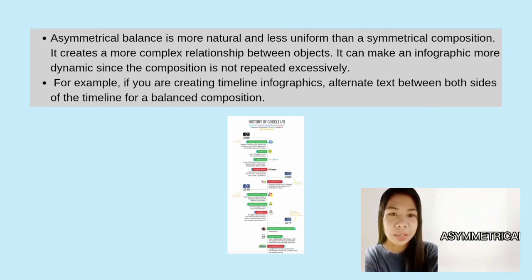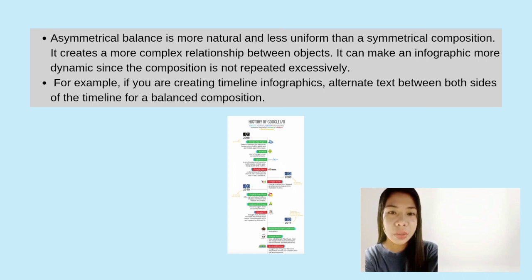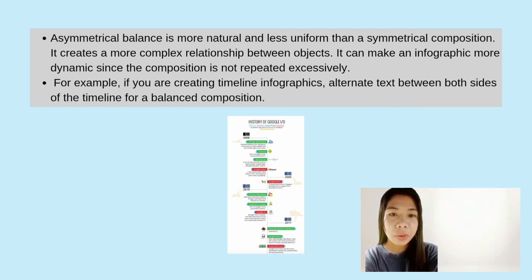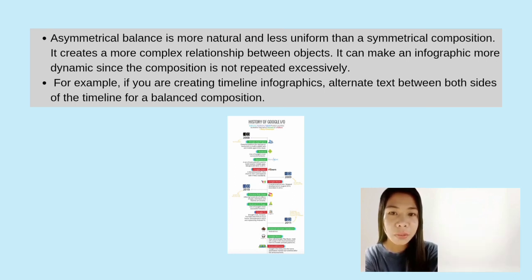The other type is asymmetrical balance. Asymmetrical balance is more natural and less uniform. It is more complex and difficult to visualize. The elements used are not identical on each side but are arranged in such a way as to still create balance. It can make an infographic more dynamic. For example, if you are creating a timeline infographic, alternate text between both sides of the timeline for a balanced composition.